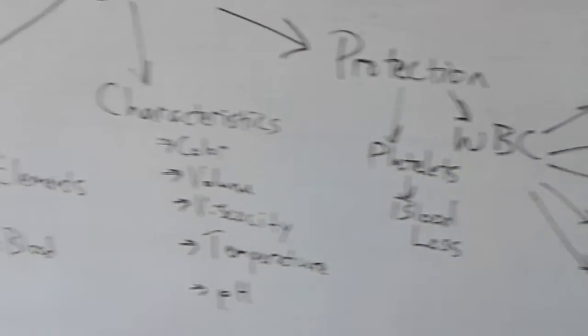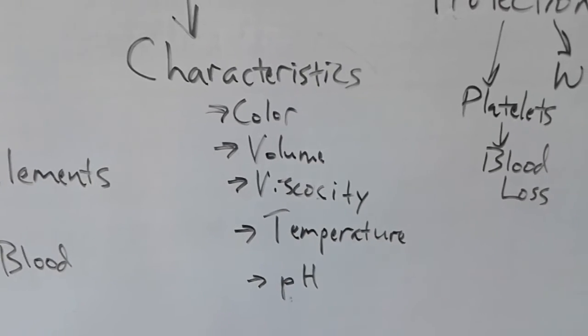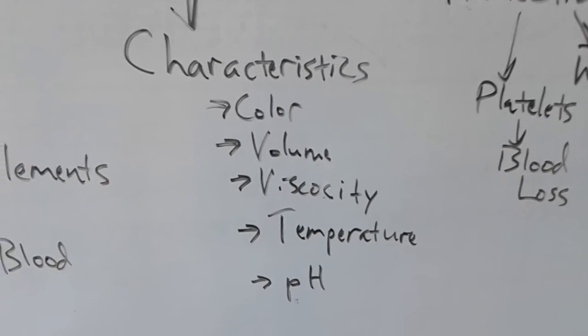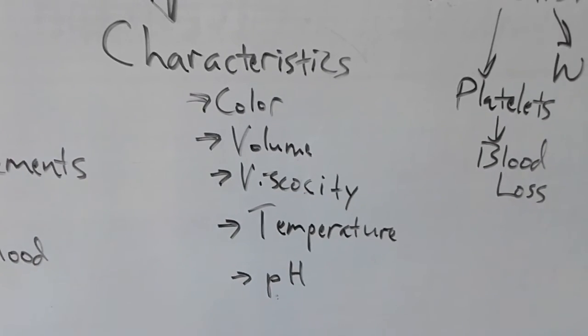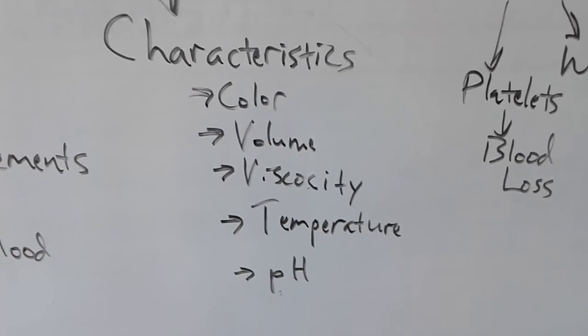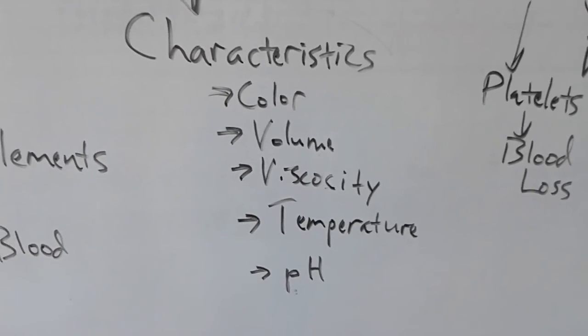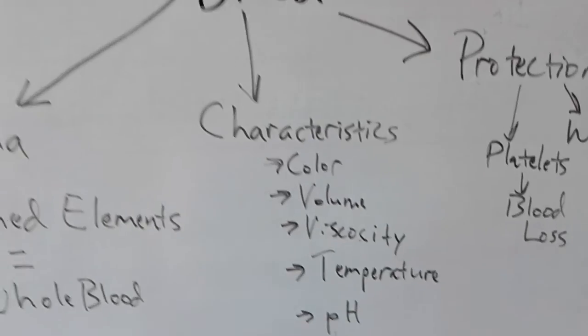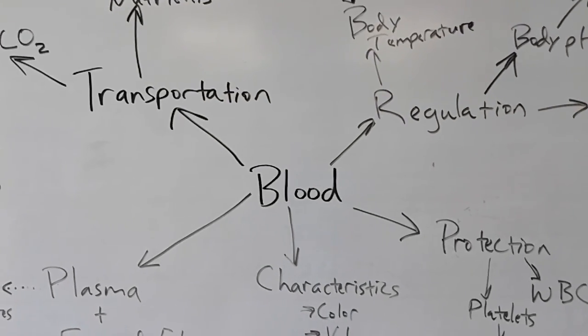And I'm almost out of time here, which gets me to characteristics of blood. And these are characteristics of blood. Color of blood. The amount of blood. Men generally have more blood than women. Viscosity is like four to five times more viscous than water. The temperature. I told you the temperature. 100.4 degrees Fahrenheit. And the pH. I told you the pH as well. Well, I'm out of time, so I'm going to have to wrap this up. You got any questions? Let me know. Peace.